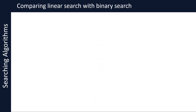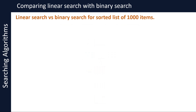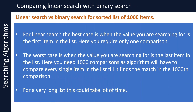Let's compare linear search with binary search. Suppose we have a sorted list of 1000 items. For linear search, the best case is when the value you are searching for is the first item in the list — here you require only one comparison. The worst case is when the value you are searching for is the last item in the list; here you will need 1000 comparisons, as the algorithm will have to compare every single item in the list until it finds the match in the 1000th comparison. For a very long list, this could take a lot of time.